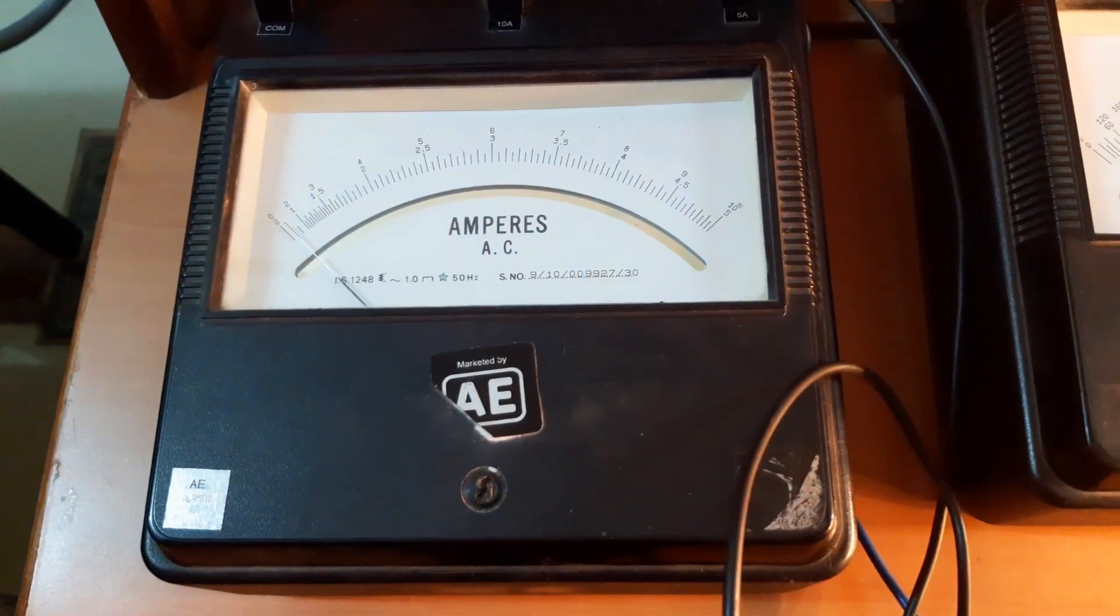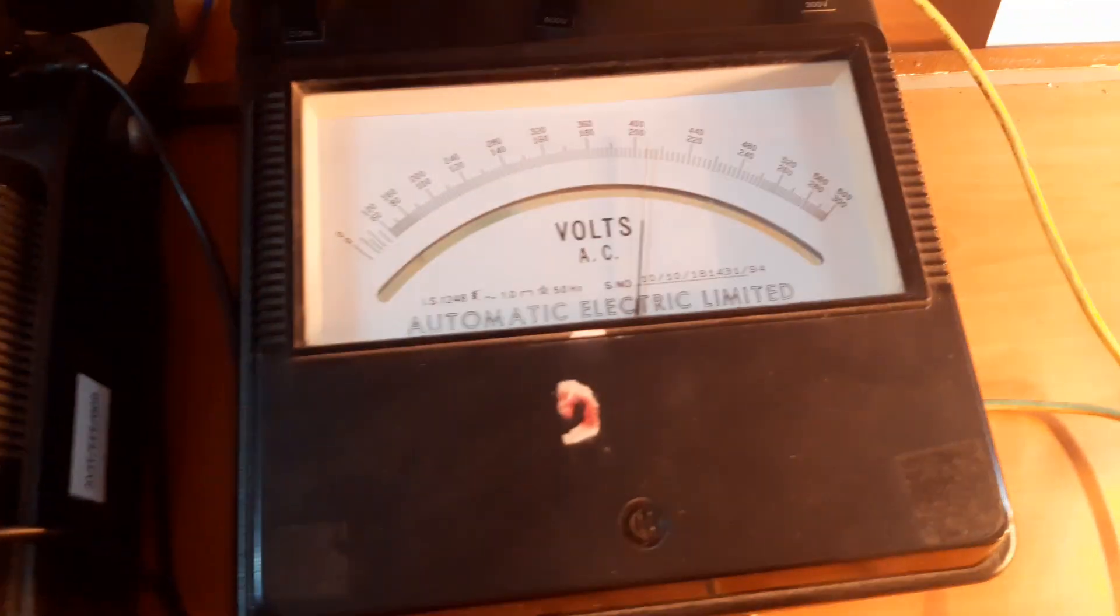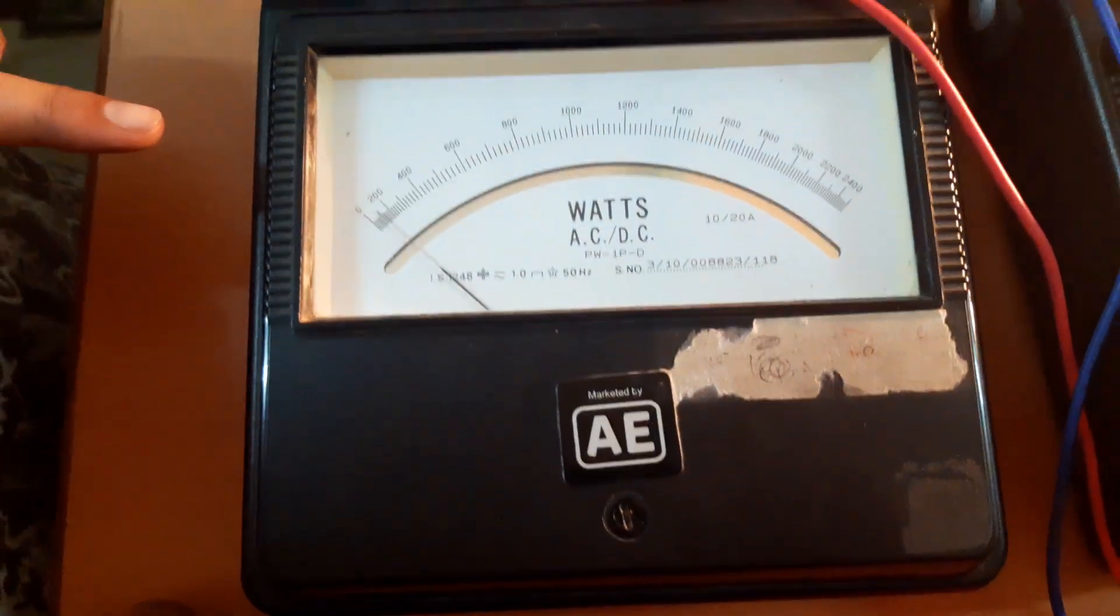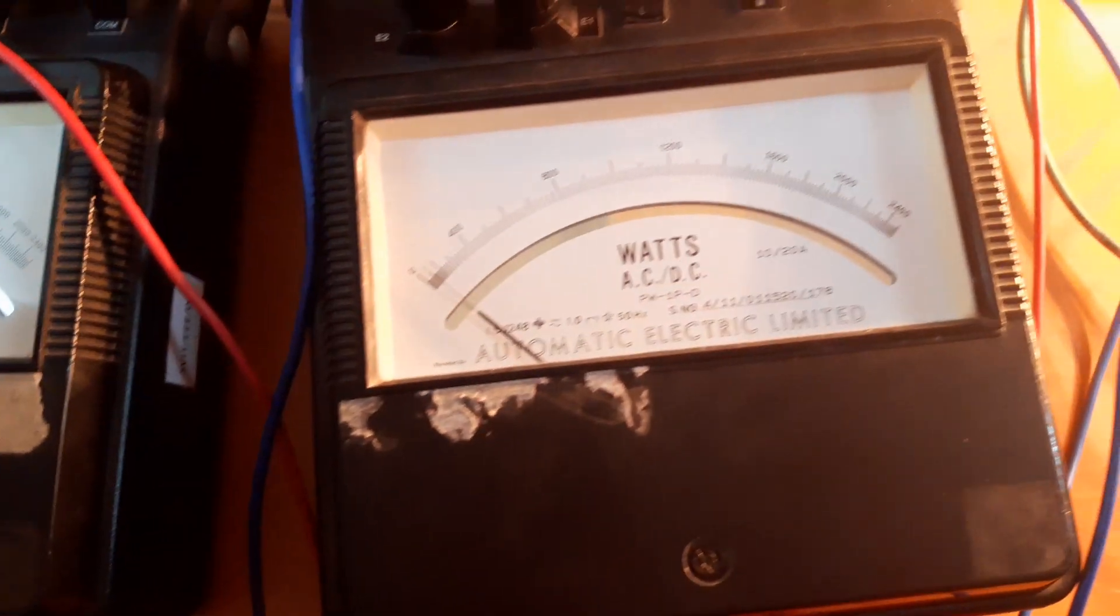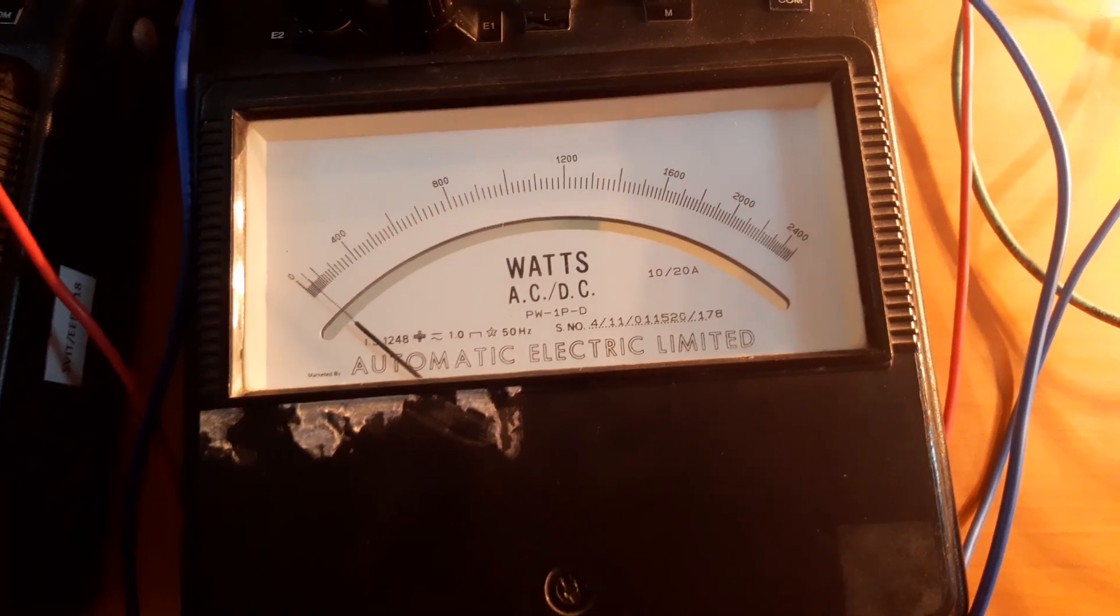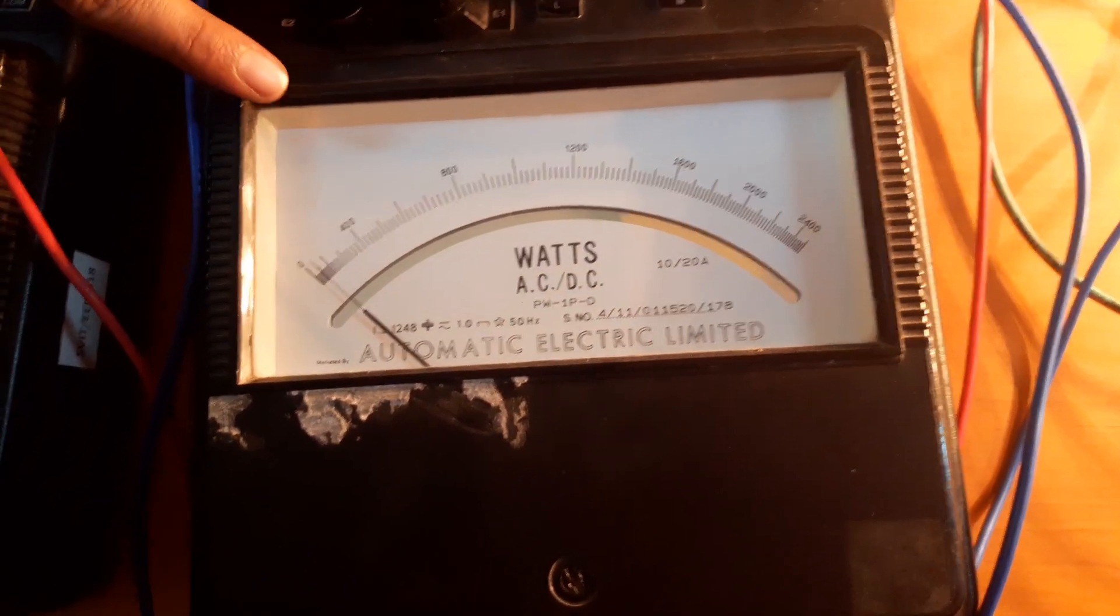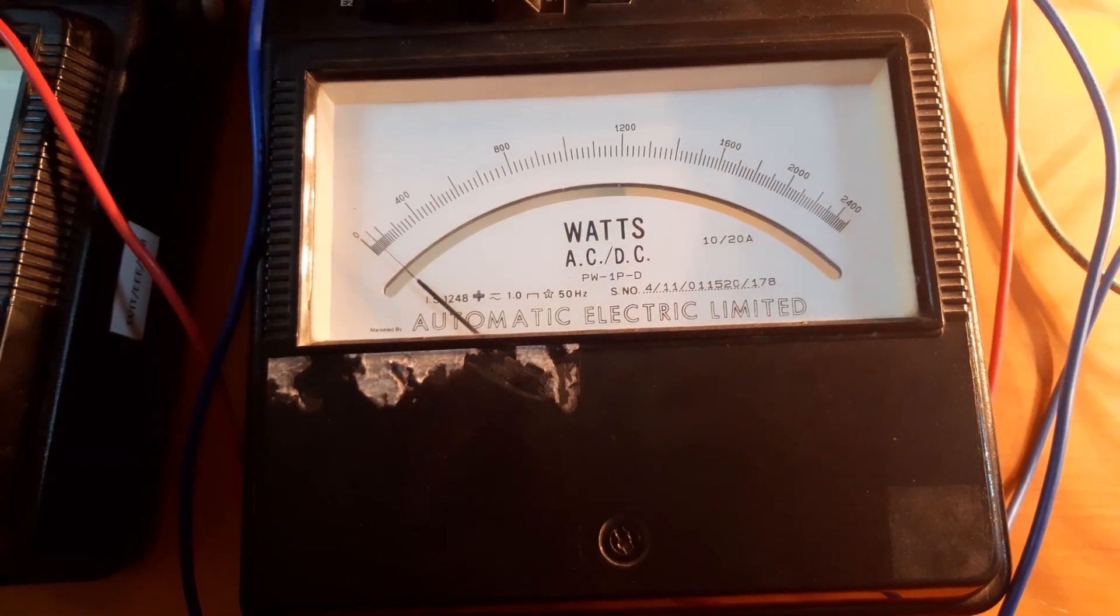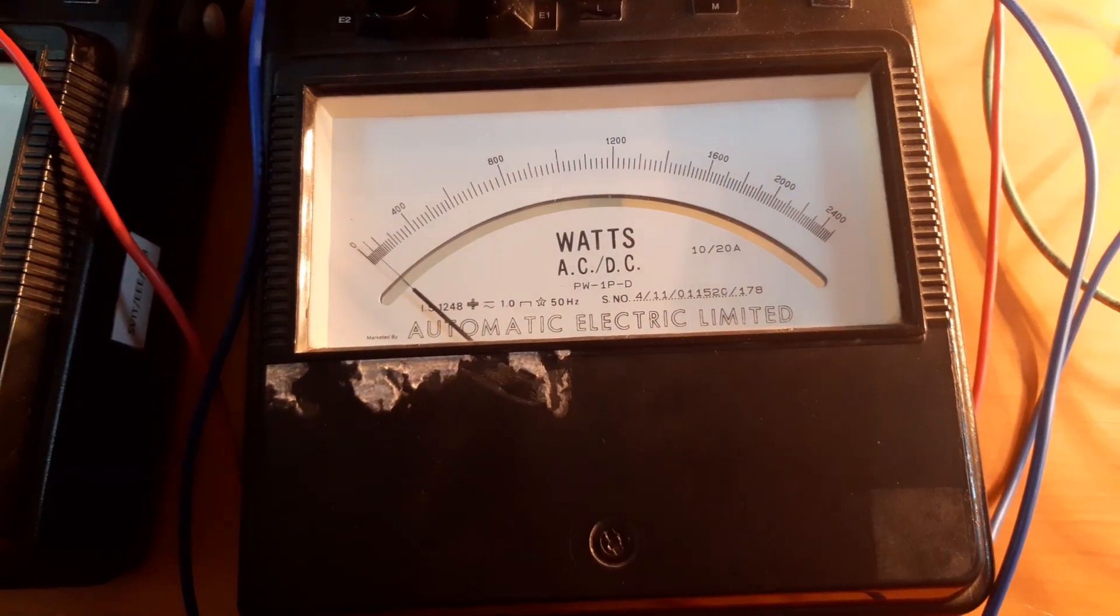The ammeter is reading 0.5 amps, the voltmeter is reading 408 volts. Wattmeter 1 is reading 90 watts multiplied with its wattmeter constant, which we have to tabulate in the tabulation column. Similarly, wattmeter 2 is reading 90 watts, multiplied with the wattmeter constant, then tabulated in the tabulation column.